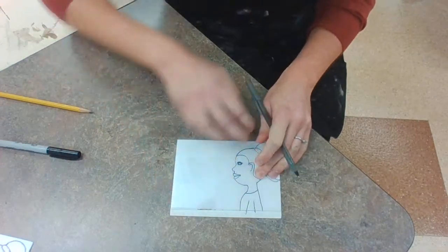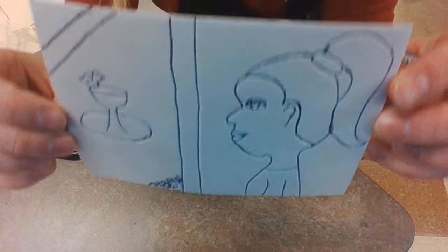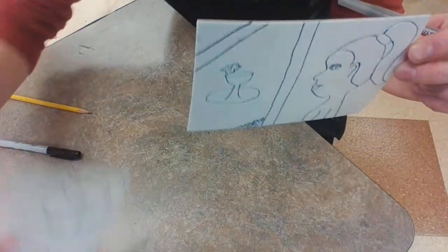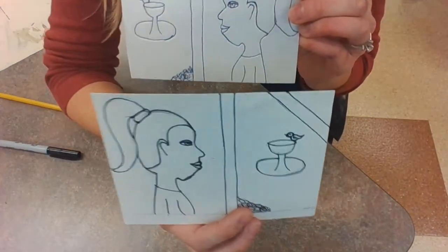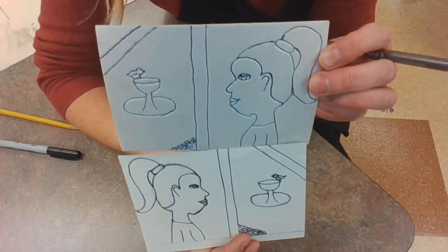I would do that to the whole thing, and I would end up with something that looks like this, my backwards image. So this was my original image that I first drew with pencil and I sharpied over. And now this is on my printing plate, so it's backwards.